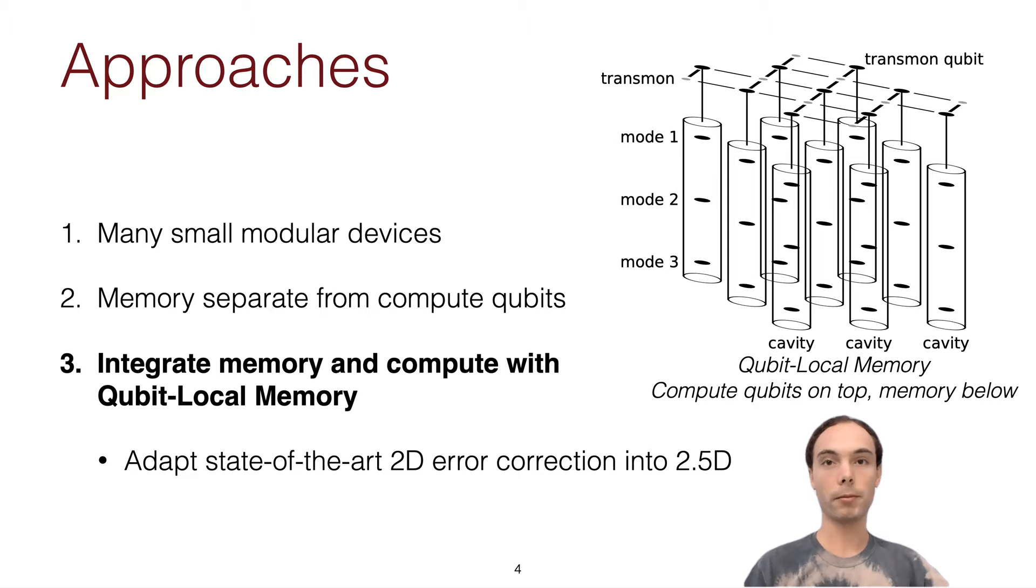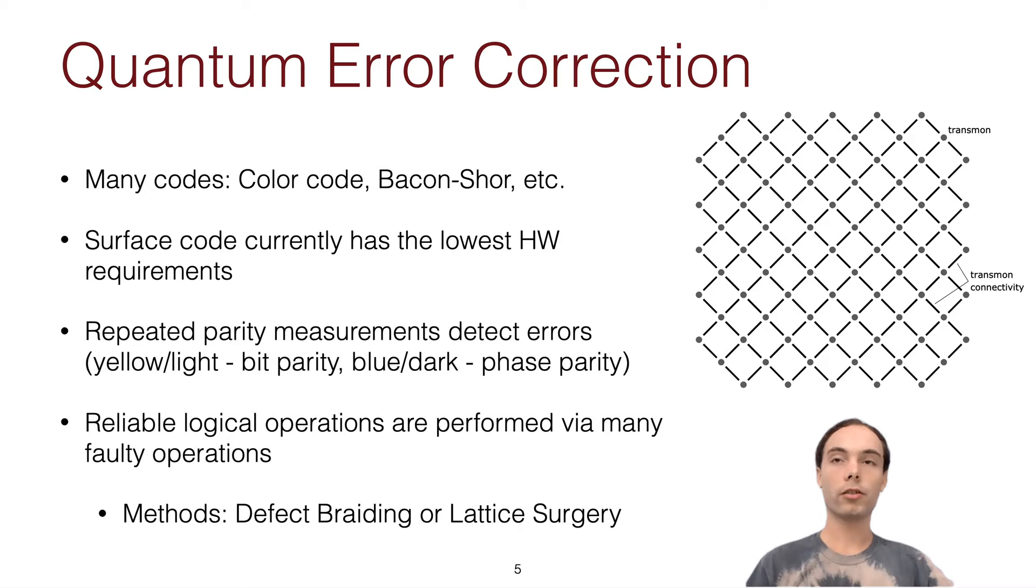So now I'll go into a little bit of background on error correction and this technology before I get into how we do the actual architecture. All right, so for quantum error correction in superconducting devices, you have this grid of transmons here on the right, and these lines between them indicate actual connections between them that allow operations, two qubit operations, on two of those qubits. And we use this grid because this layout is well suited for the surface code error correction, although there's many other codes.